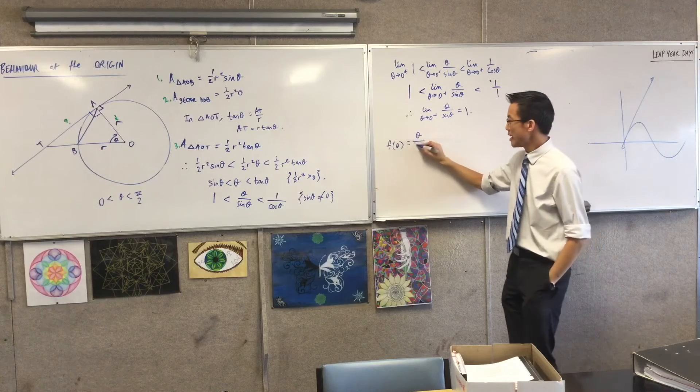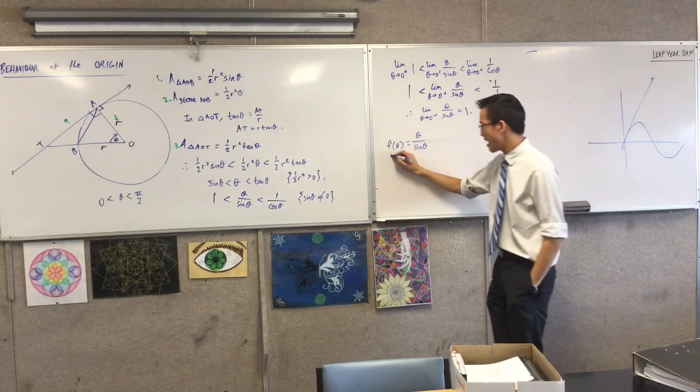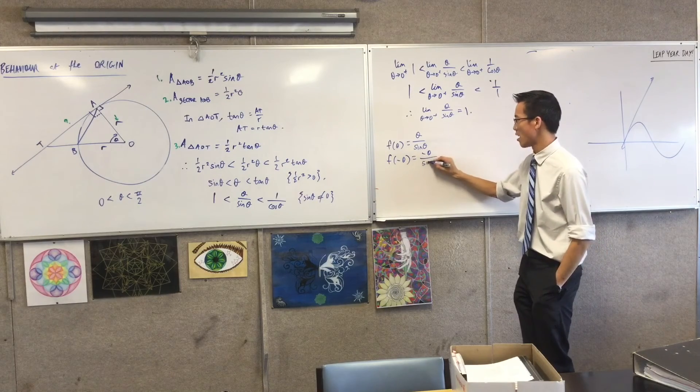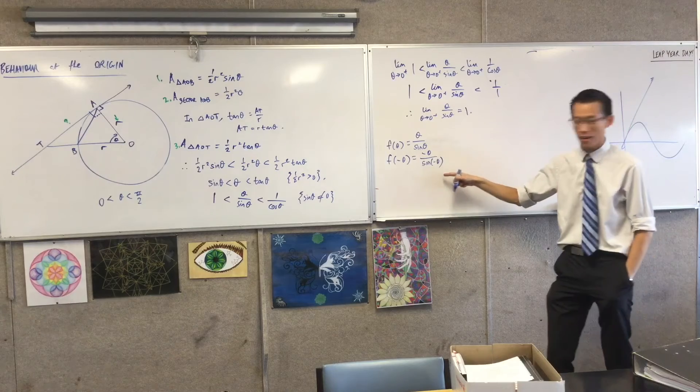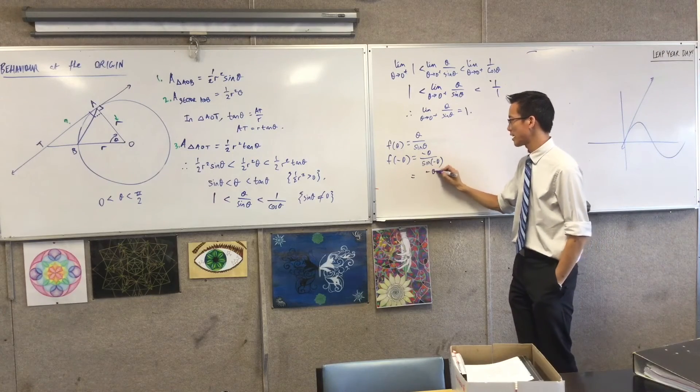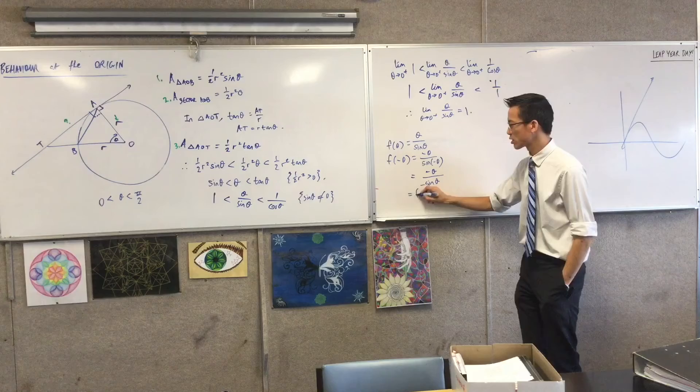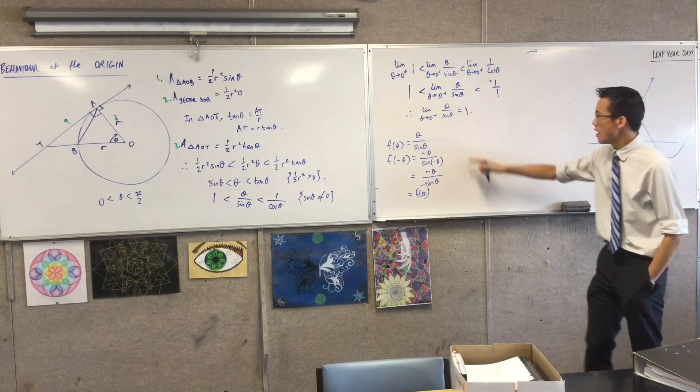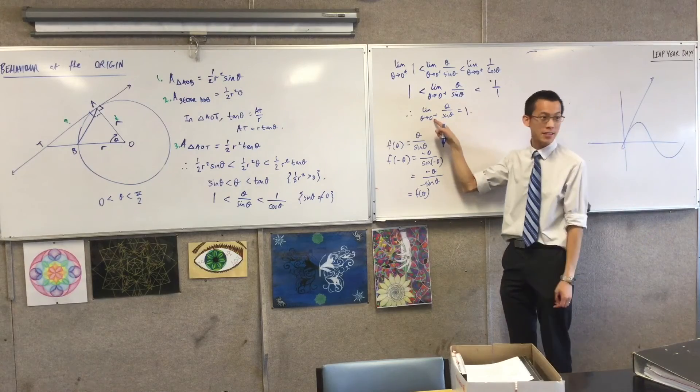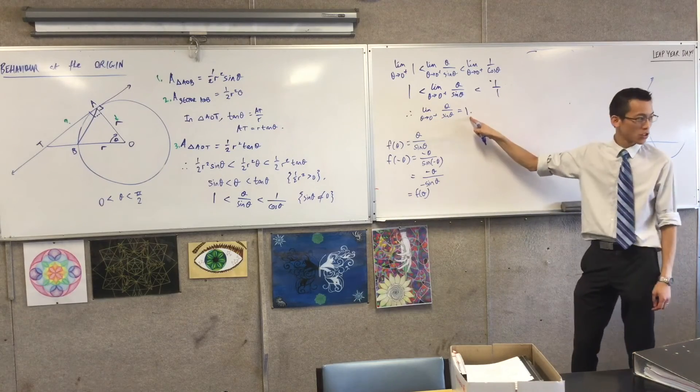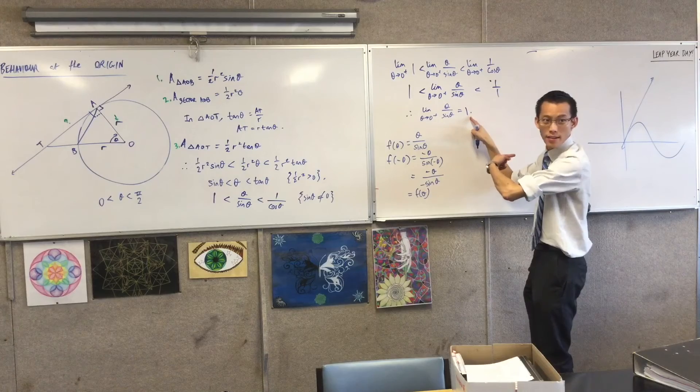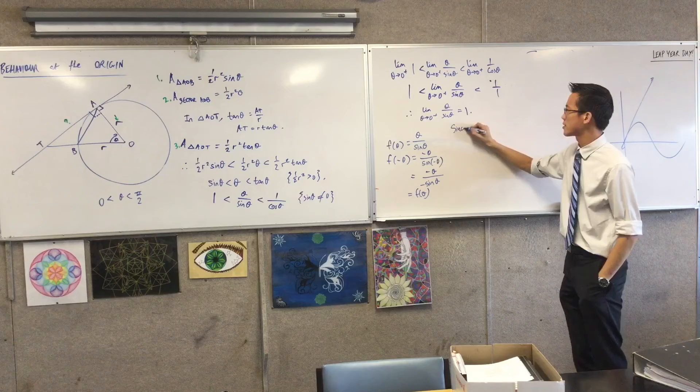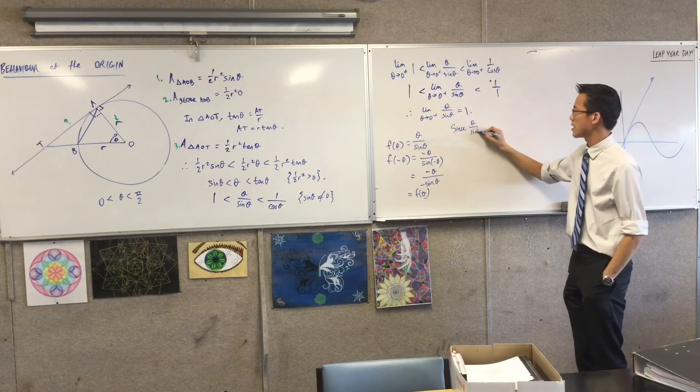Now if this is f of theta, then f of negative theta will be minus theta over sine of minus theta, which is - ah, there's an odd function there - so that's going to become negative theta over negative sine theta. That looks like the original f to me. So f sure enough is even. If this is an even function, and I come from the right-hand side and it does that, then what should happen if I come from the other side? Exactly the same thing.